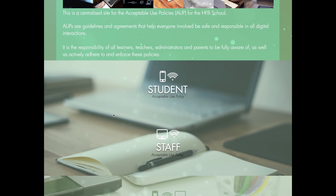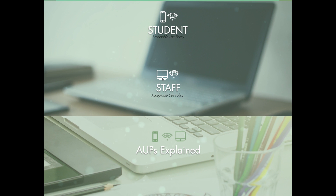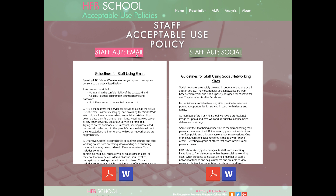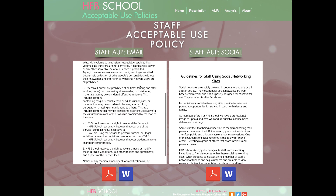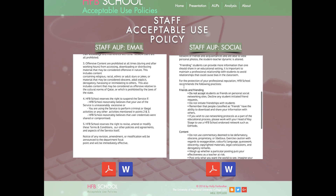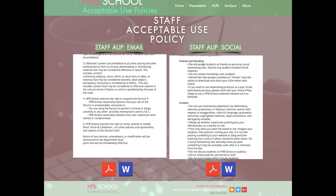From the same AUP website you can navigate to the page for the staff acceptable use policies. Currently there are two: one addresses the use of email and one is specific to the use of social media. Our recommendation is that these will be consolidated in the future. As with the student policies, these documents are available to read online and are embedded on the website, or they can be downloaded as either a PDF or a Word document.